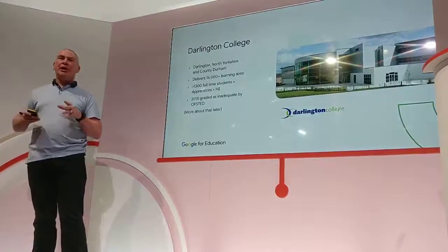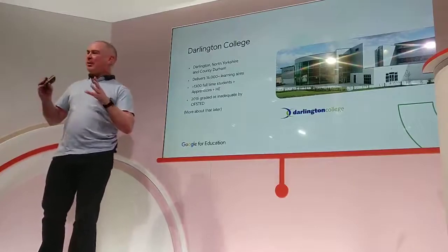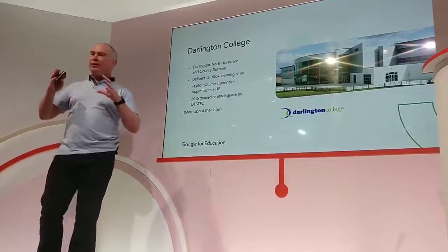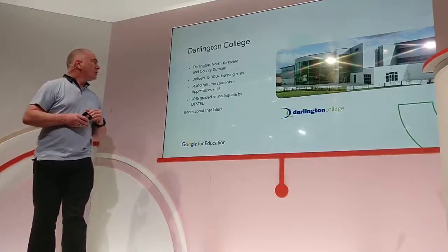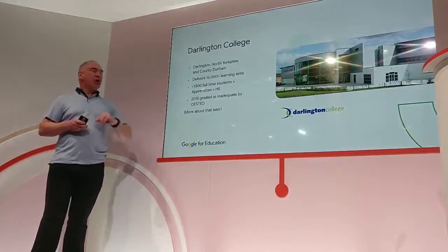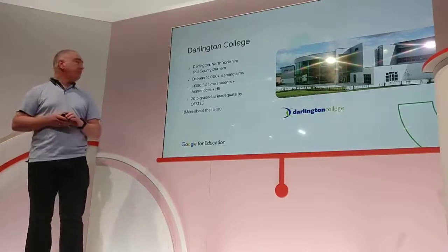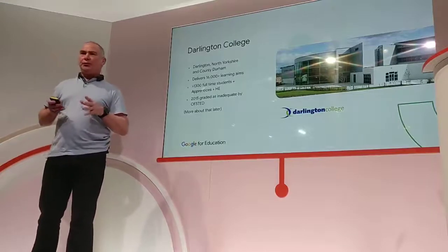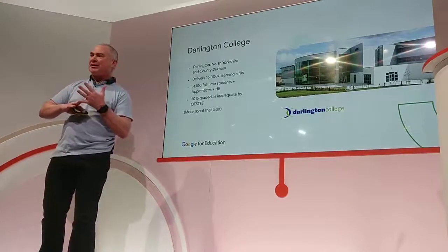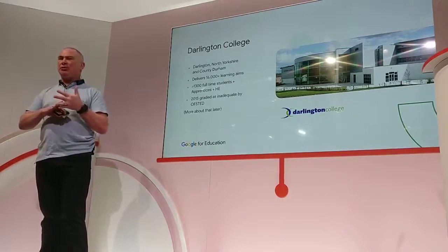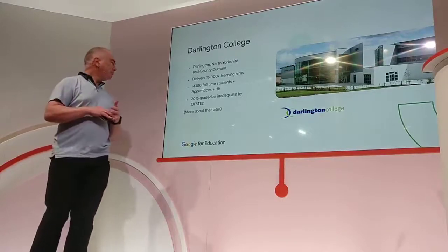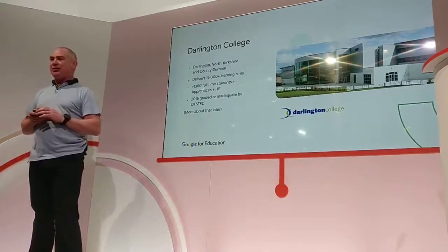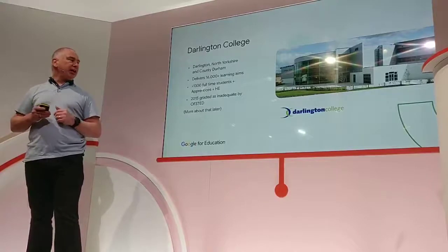A little bit about Darlington College first. By today's standards, we're a fairly small to medium-sized college — we're not one of the large colleges, but we do feel that we need to put our weight. We have 1,600 enrolments, just over 1,300 college-based students, around about 600 apprentices, and 215 further education students. Now back in 2015, we were graded as inadequate by Ofsted, but I'll come to that later.